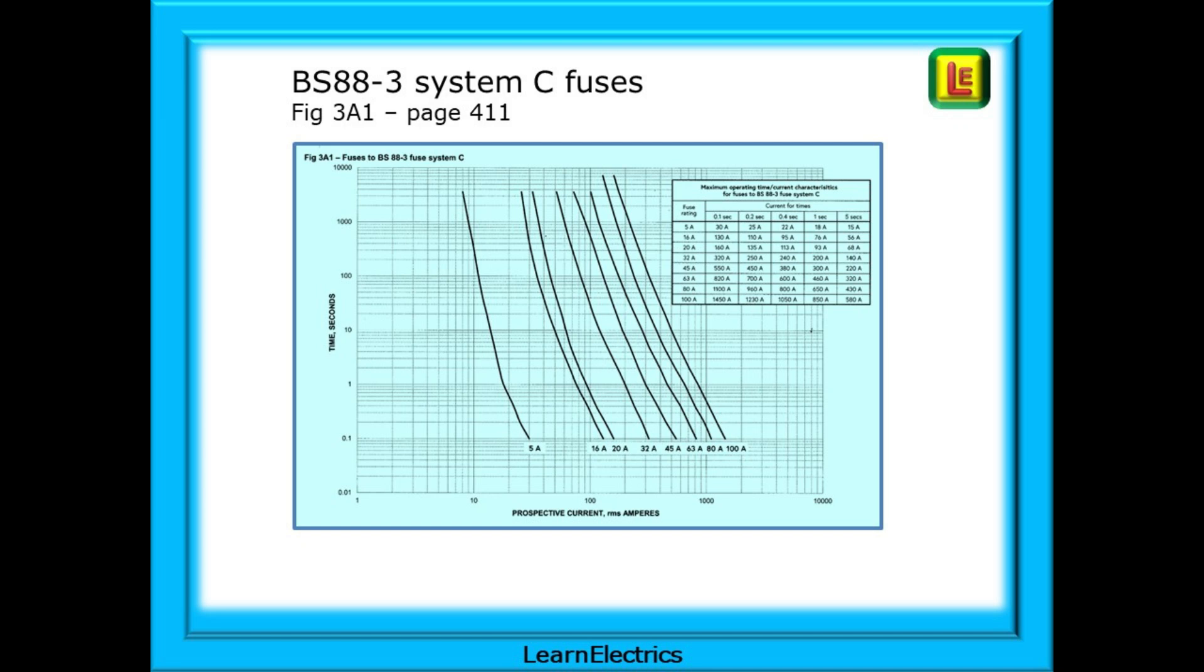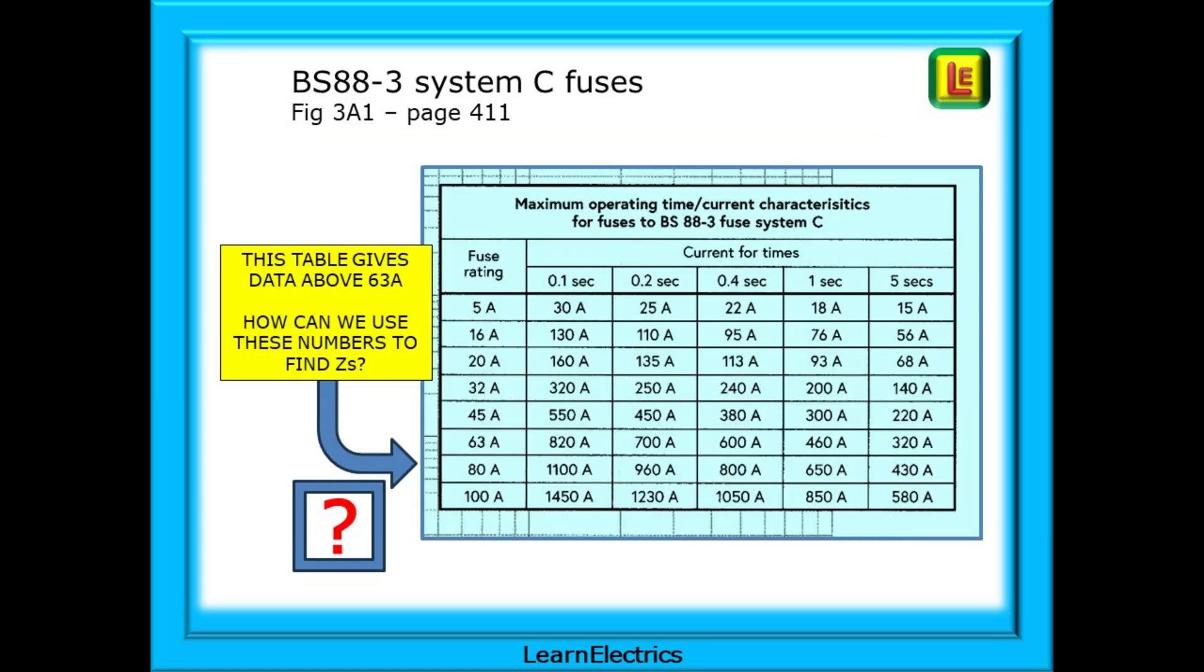Turn now to page 411 of the book. This is figure 3A1 and shows the current and time curves specifically for BS88-3 system C fuses. These are sometimes called the response curves or tripping curves and each fuse type will have its own unique curves. Of most help to us is the chart shown at the top right. This table lists data values above the 63 amps shown on page 67. And the 80 amp fuse that we need data for is shown here. But these are not ZS values. They are the amount of fault current that must flow in order that the fuse disconnects the supply in the required time. How can we use these numbers to find ZS?